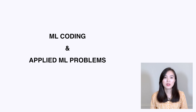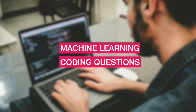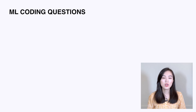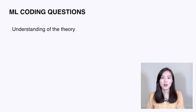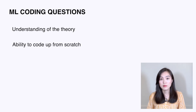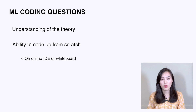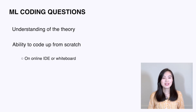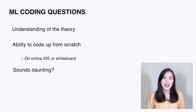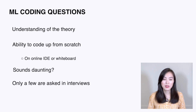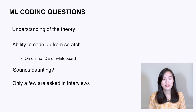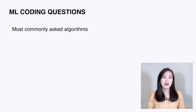The next two types of questions are more hardcore and mainly appear in interviews for data scientist positions focused on machine learning. Machine learning coding questions evaluate not only whether you understand the theory of an algorithm, but whether you can code it from scratch in a short amount of time. Typically the interviewer asks you to implement an algorithm using an online IDE or on a whiteboard. There are only a limited number of algorithms that appear in these interviews.